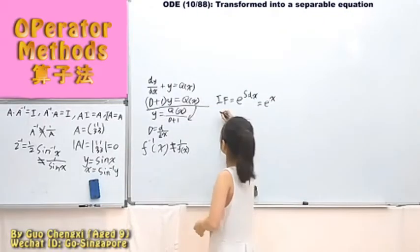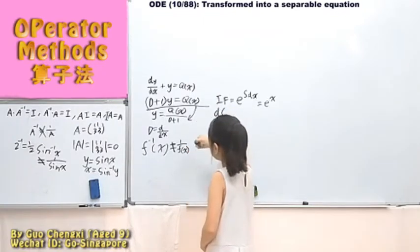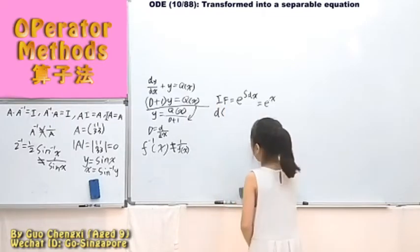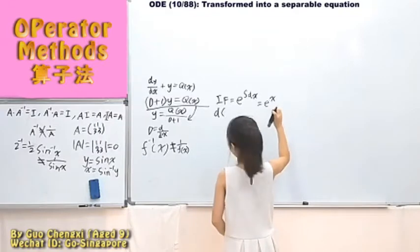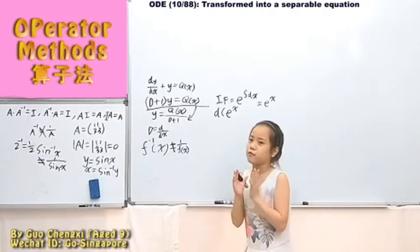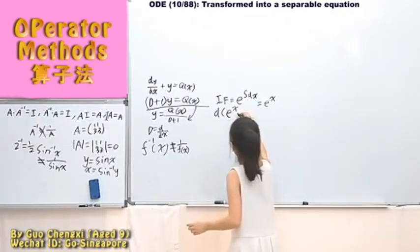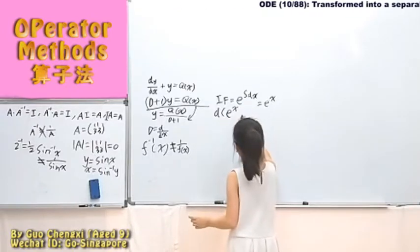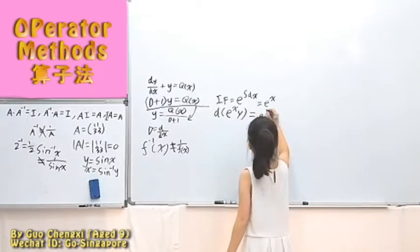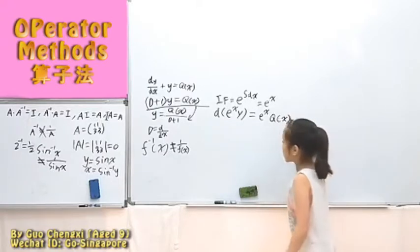It becomes e to the power of x. Here we need to use total differentiation. And then it will become e to the power of x times y, which is equal to e to the power of x times q(x). It becomes like this.